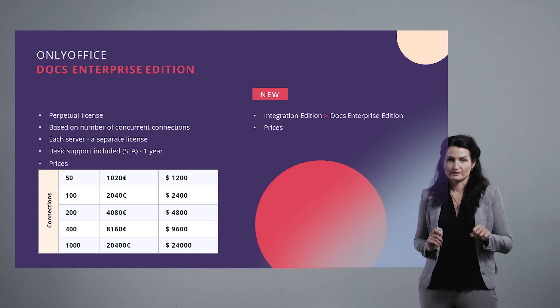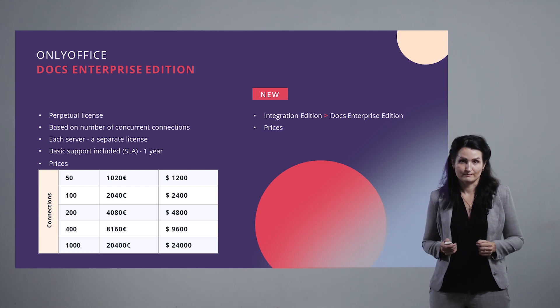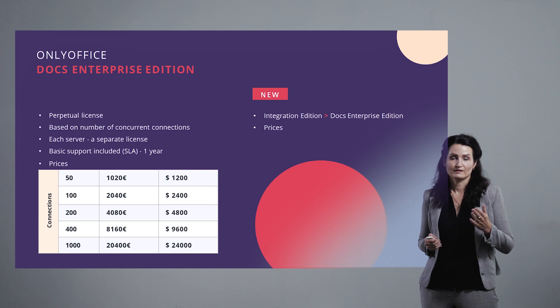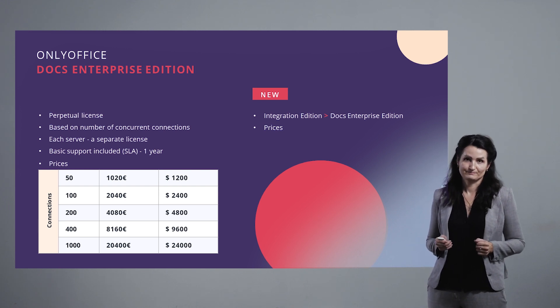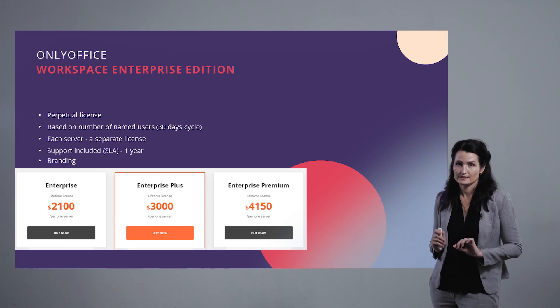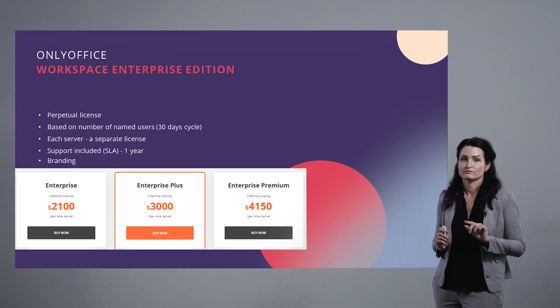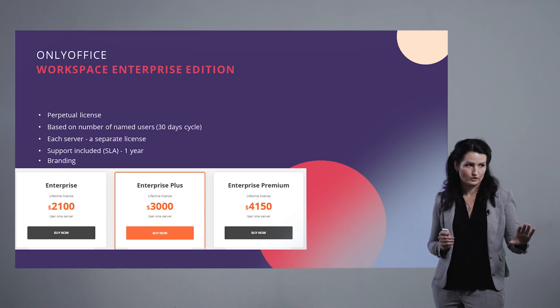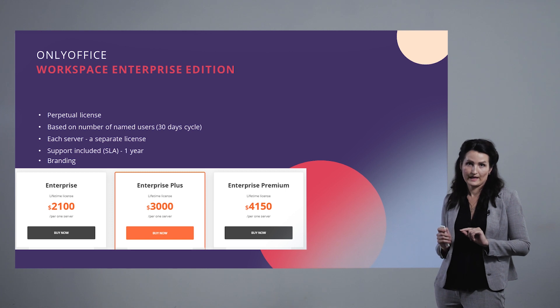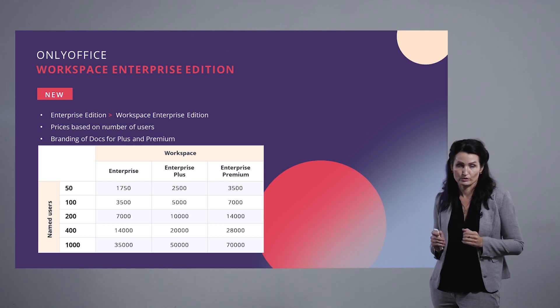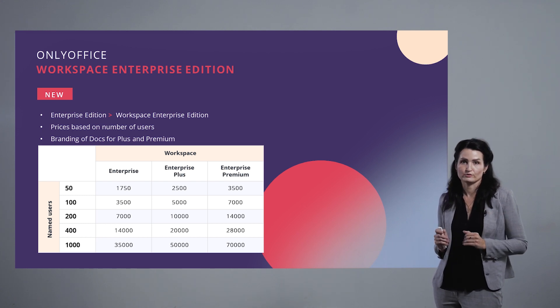We have changed not only the names of the software but also the pricing — you can check the new pricing options on our website. For the Workspace, we still have a lifetime license with one year of support and updates included. But from this version we decided to license the software based not only on the number of concurrent connections but also on the number of named users. We have also introduced branding options for higher levels of support, so you can now choose what level of support you need for your Workspace.